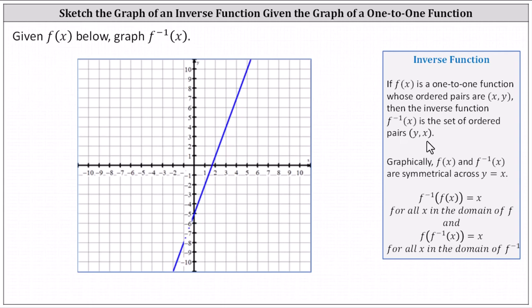To graph the inverse of the given function, we can find several points on the given line and then interchange the x and y coordinates and plot those points — those points will be on the graph of the inverse function. It's also important to recognize the given function is one-to-one. The graphical test to see if a function is one-to-one is called the horizontal line test. If a horizontal line never intersects a graph in more than one point, then the function is one-to-one. This is important because only one-to-one functions have inverse functions — meaning inverses that are also functions.